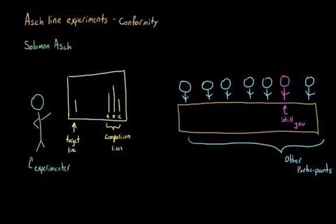The experimenter holds up a card with a target line on it and three comparison lines. And the participant needs to figure out which comparison line matches the target line. And for each card, you're supposed to go down the line one by one and give your answer. And the first trial starts and everybody gives what is obviously the right answer and you give it too.